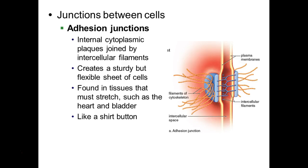Cells have to talk to each other and act together when they are in an organ. One of the things that might join cells together is called an adhesion junction. This is an internal cytoplasmic plaque joined by intracellular filaments, which allows cells to come together in a sturdy but flexible sheet. We find this in tissues that have to stretch — the heart has to stretch as it beats, and the bladder stretches as it fills with urine. So adhesion junctions hold these cells together in organs but allow them to stretch. You can see this plaque acts like a button, buttoning the cells together, with filaments of the cytoskeleton attached to it and an intracellular space in between.